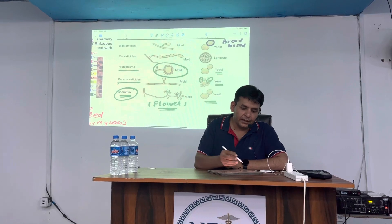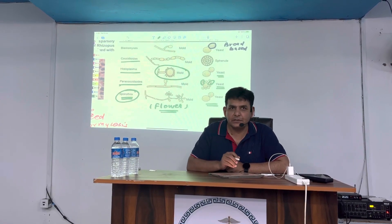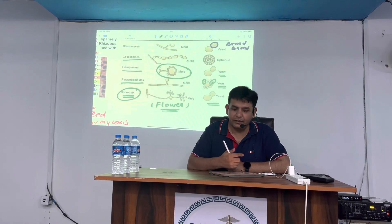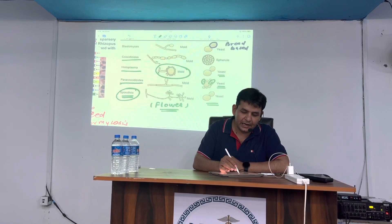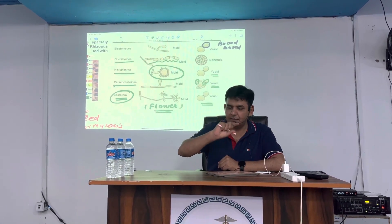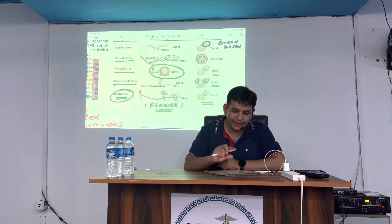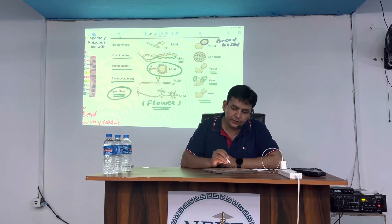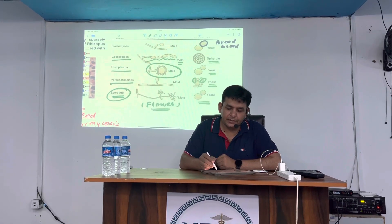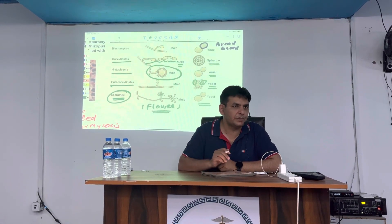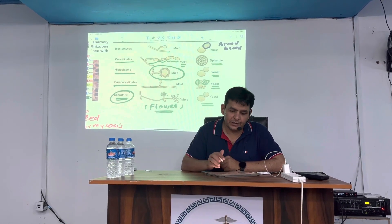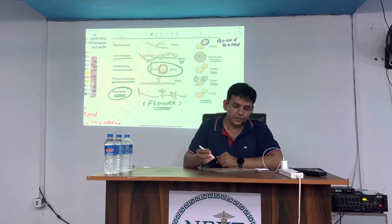We also have coccidioidomycosis, which is associated with valley fever or desert rheumatism. It has an arthroconidial arrangement with barrel-shaped structures, alternating like a train. The tissue form is a spherule with endospores. The same spherule with endospores is also seen in rhinosporidiosis.